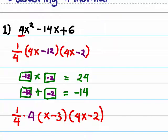Now we can cancel out this 1 fourth times 4 which is equal to 1. So the final factorization is x minus 3 times 4x minus 2.